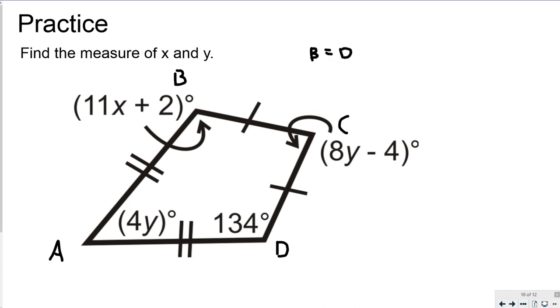So I can then say that the expression for B, 11X plus 2, has to equal the measure of angle D. So if I solve, I get 11X equals 132, and divide by 11 on both sides, X has to equal 12.